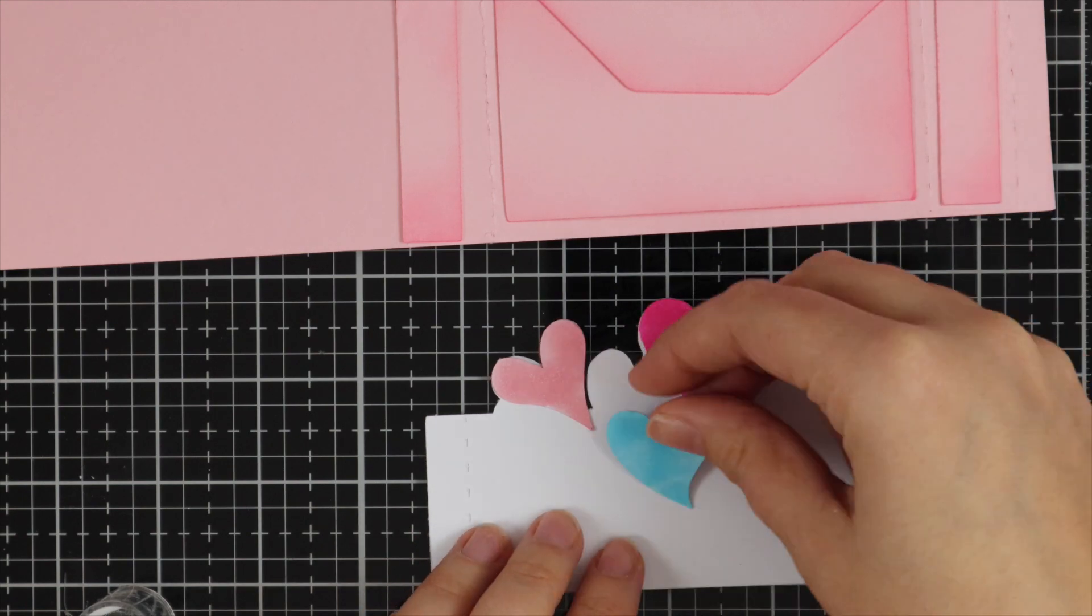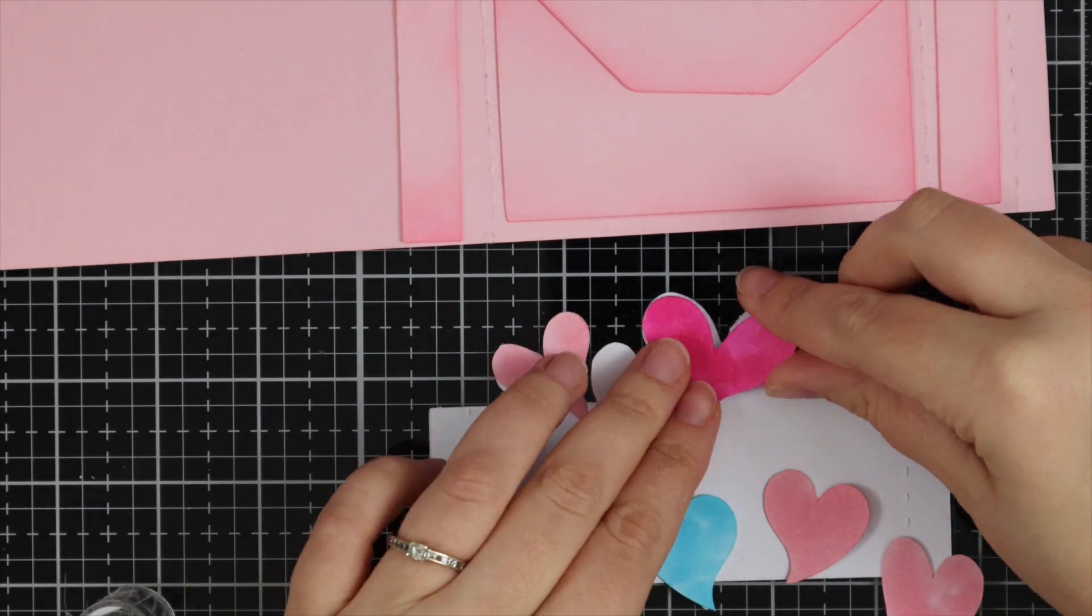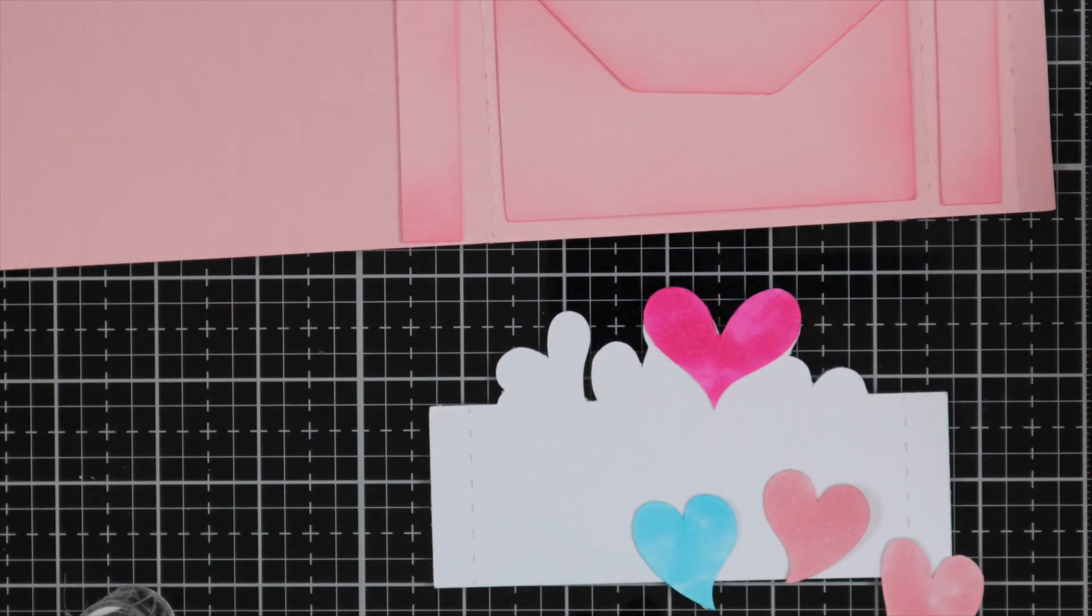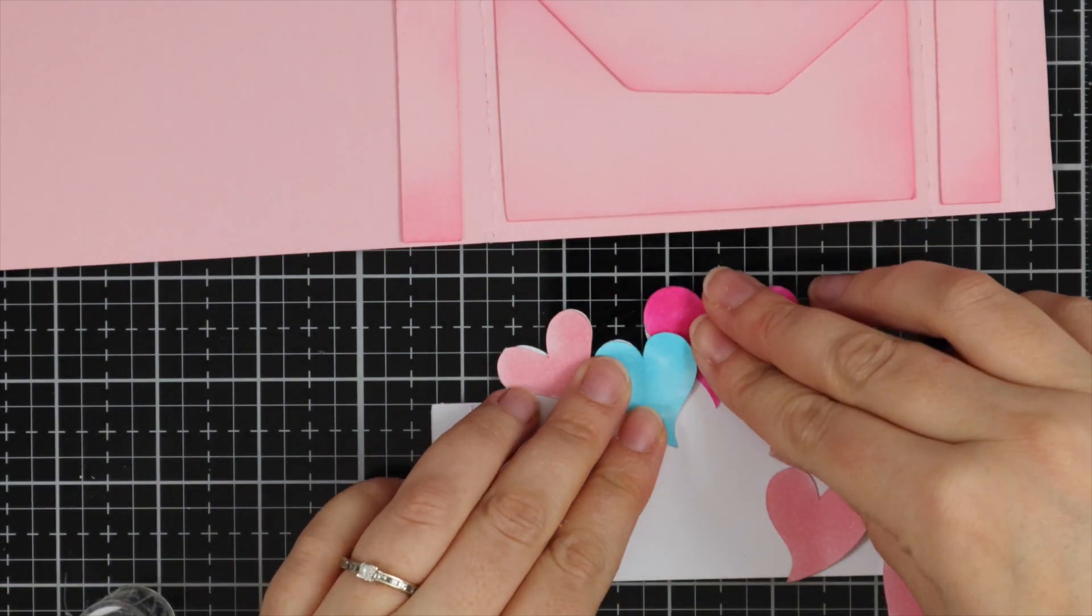And I'm just using my PVA glue for this. I love using PVA glue with things like this because it's quite easy if you make a mistake, just to gently move your die cut piece before it dries hard.